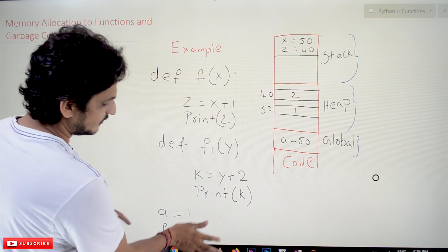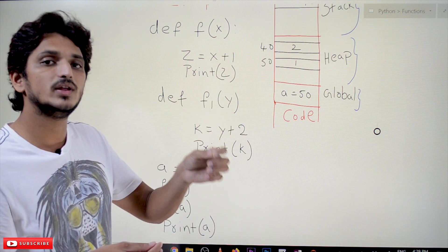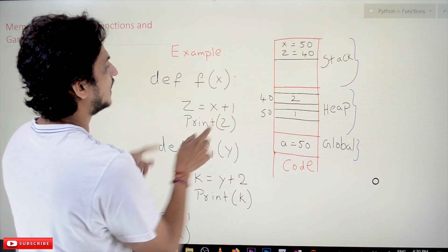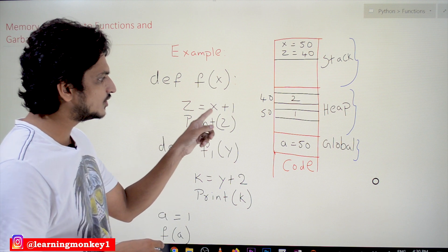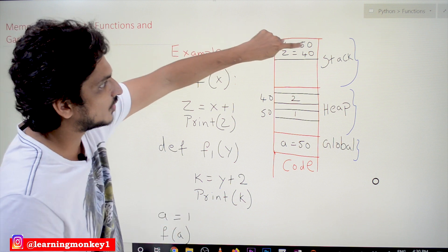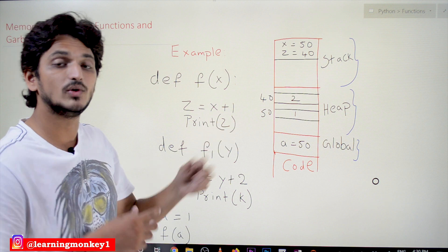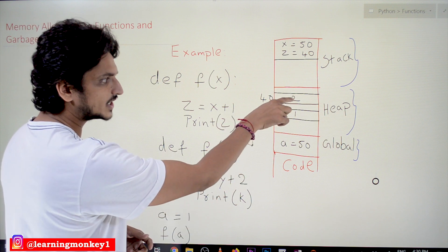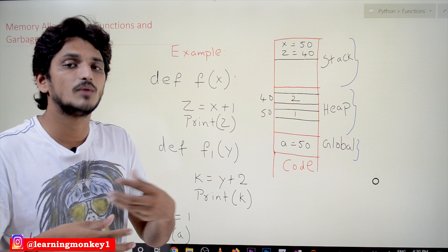When we call the function, we send a, meaning the reference of a is sent to the function and saved in the variable x. So x is referencing to memory location 50. After that, it starts executing the program. The next line is z = x + 1. It goes to the function's space, finds x = 50, gets the object 1 from memory location 50, adds 1 + 1 = 2, creates a new object 2 in heap space at memory location 40, and z references memory location 40.